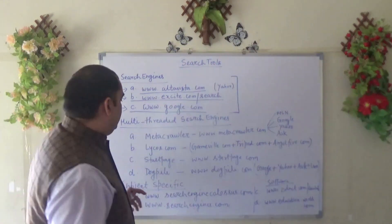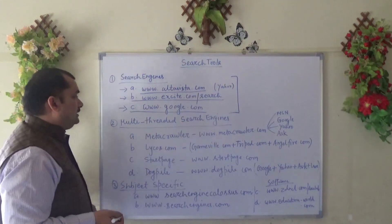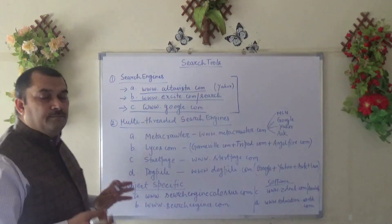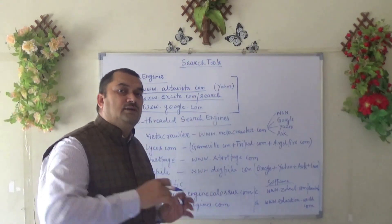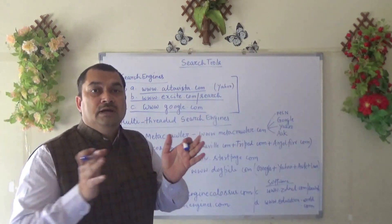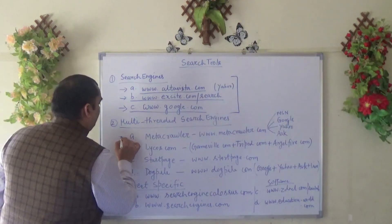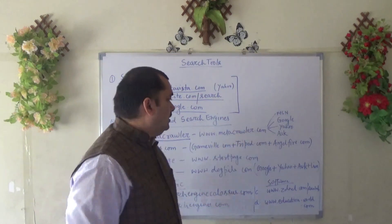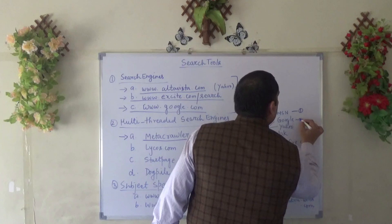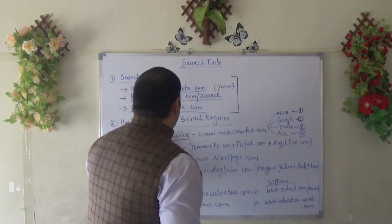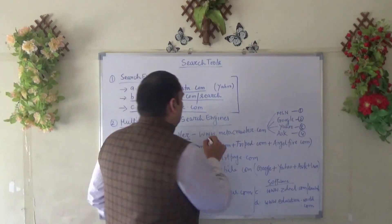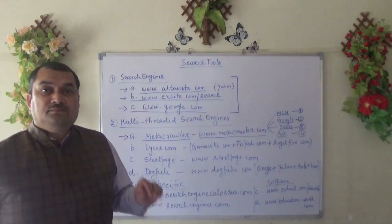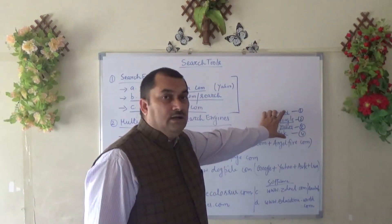There are also multi-threaded search engines, also known as meta search engines. What they do is retrieve information not only from one search engine but from multiple search engines. The first important one is MetaCrawler at www.metacrawler.com. Four search engines are combined in MetaCrawler — MSN, Google, Yahoo, and Ask. So if you put any keyword in metacrawler.com, it searches information from all four and you get results from multiple databases at once.